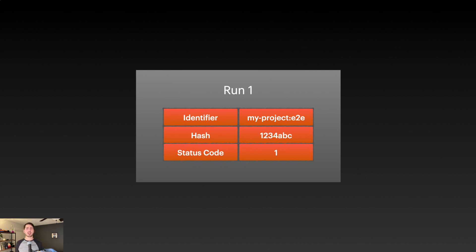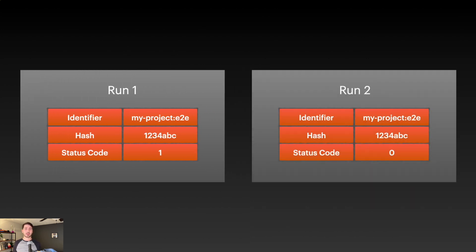So how can we use this to detect task flakiness? Let's say I've run my task in CI. NX Cloud becomes aware of a task with identifier MyProjectE2E, a hash of 1234abc, and a status code of 1. Since I've worked in this project for a while, I know this was a flake. But NX Cloud needs more evidence before it can say for sure that this task is flaky. On run two, we have the same project identifier of MyProjectE2E and the same hash of 1234abc, but this time we get a status code of zero — our tests pass. Now that we've received two different status codes for the same hash, NX Cloud has detected that this task is flaky.